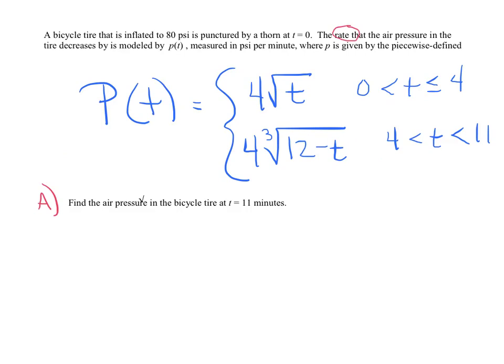Question A: Find the air pressure in the bicycle tire at t equals 11 minutes. Let's review what we have. We know that at t equals 0, we have 80 PSI. That's our initial condition.